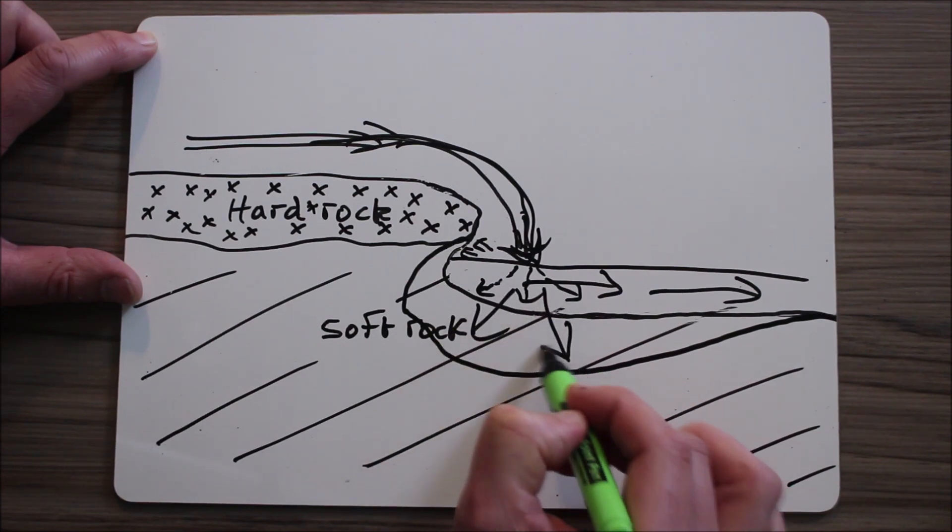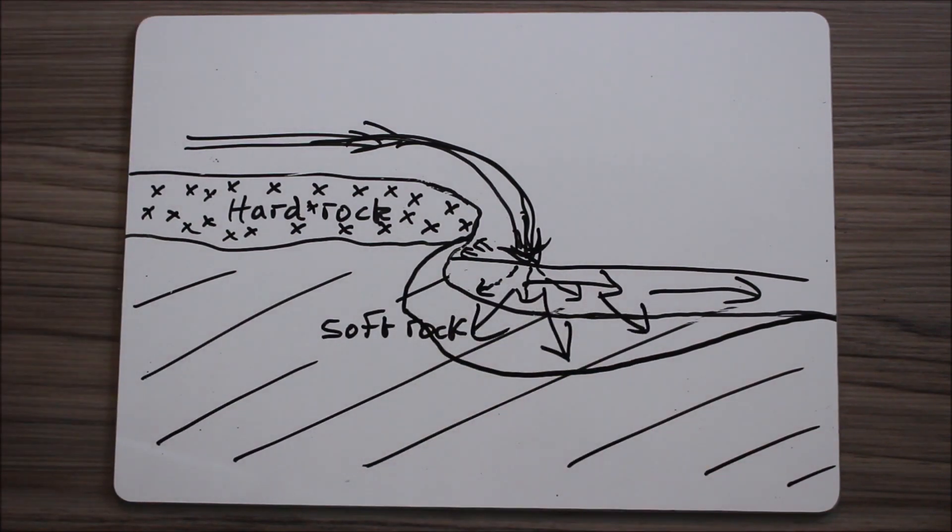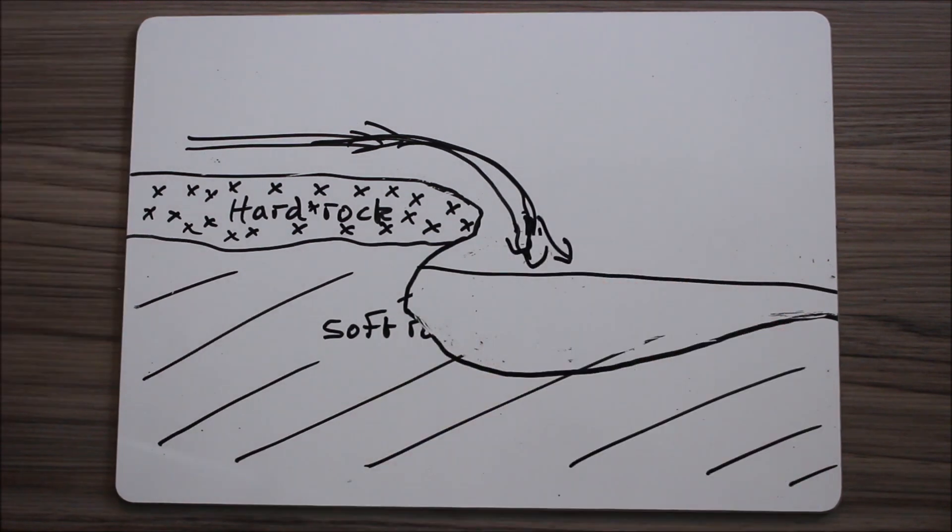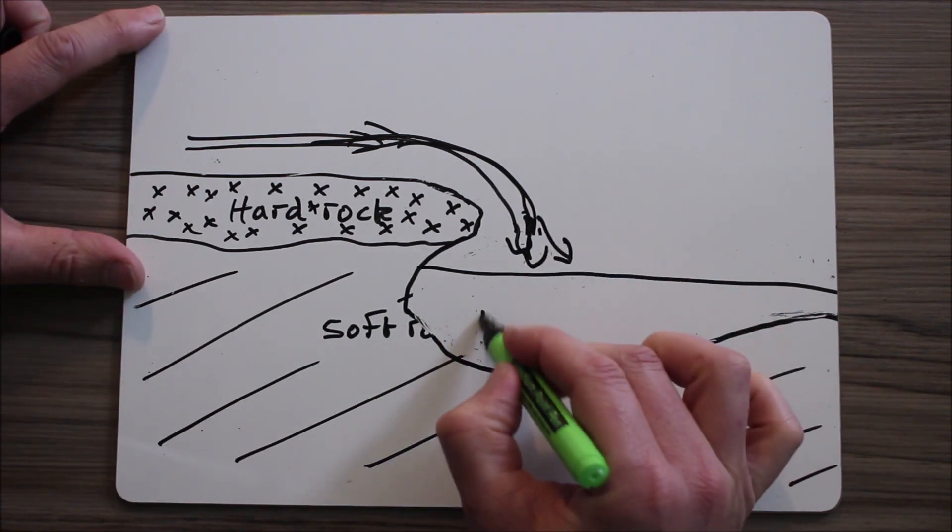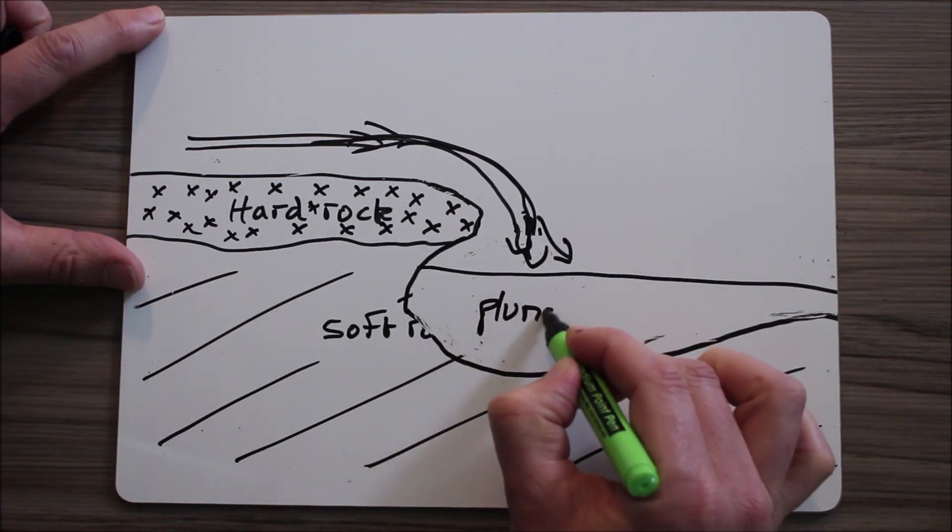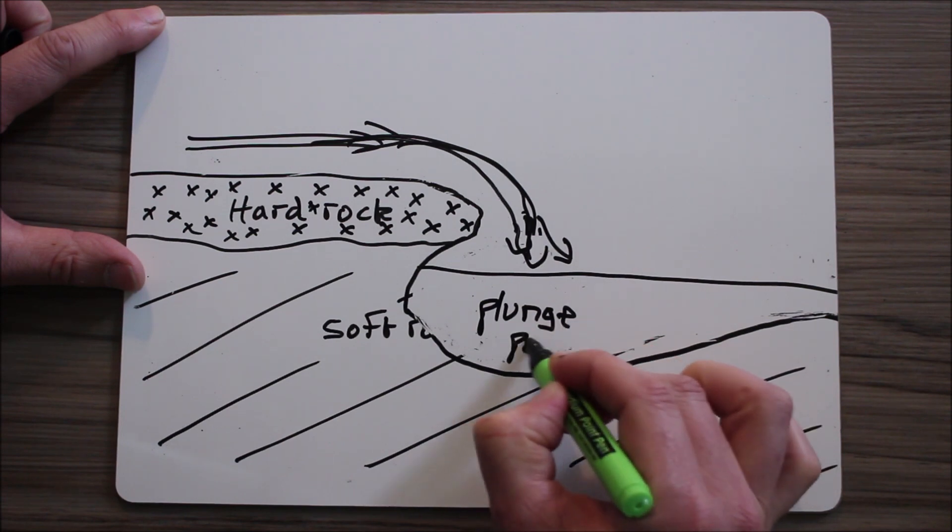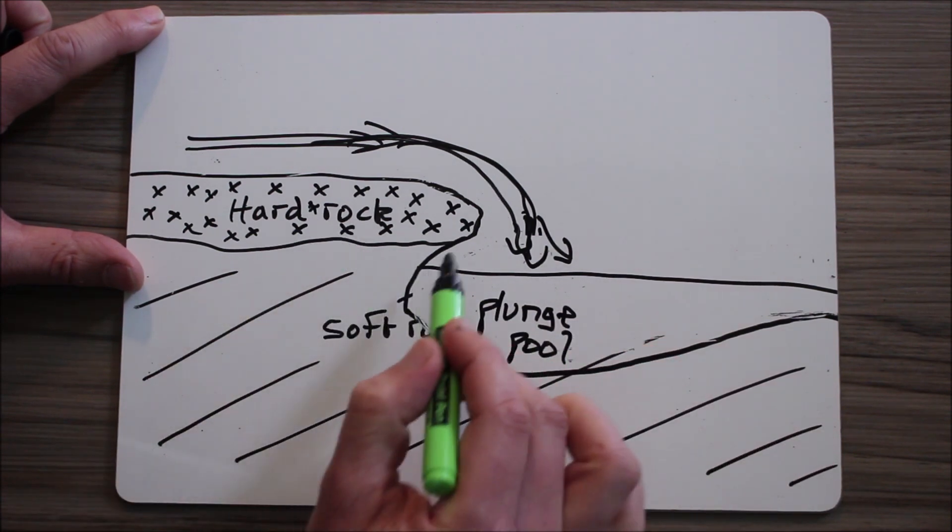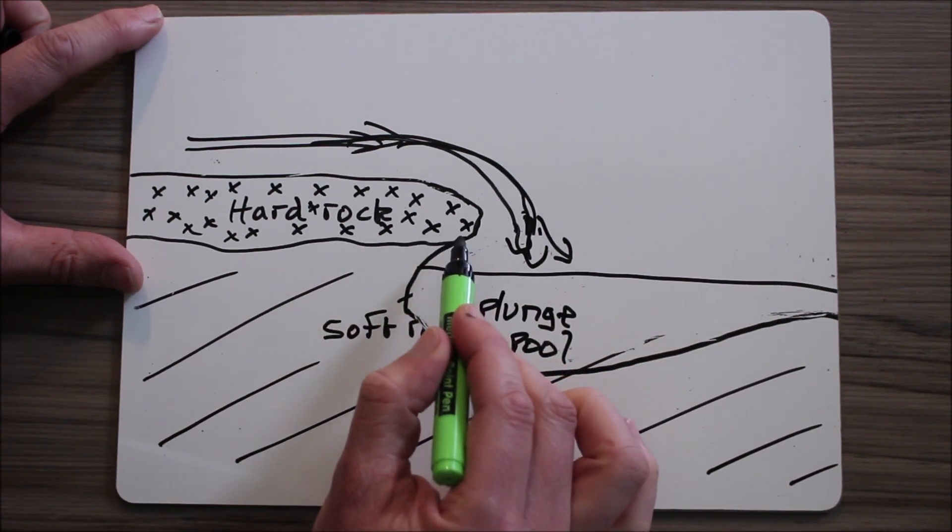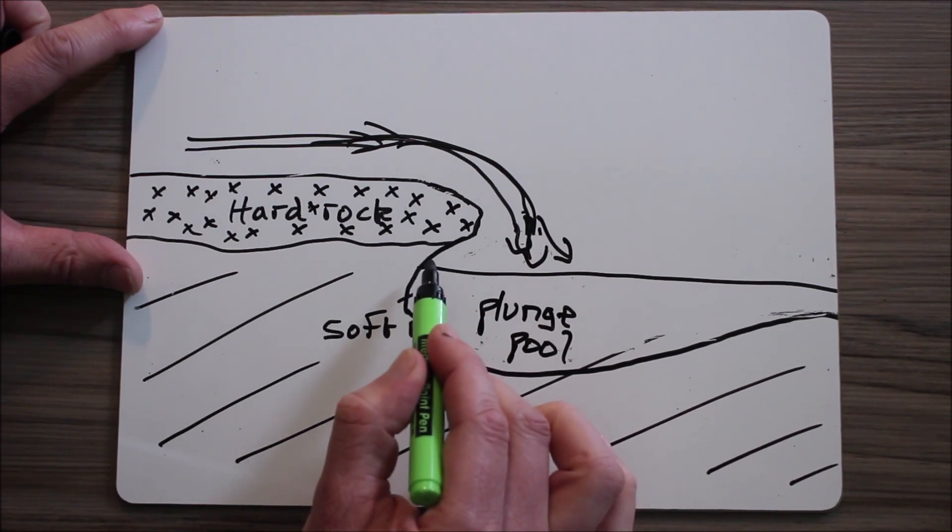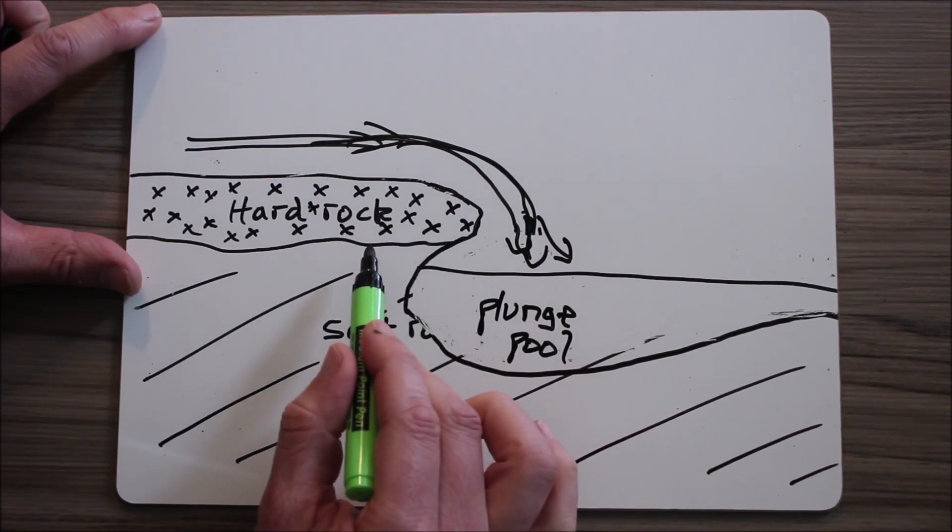What we've got now is quite a deep plunge pool, and the hard rock here has been left overhanging as the soft rock has been undercut underneath it through the processes of hydraulic action and abrasion.